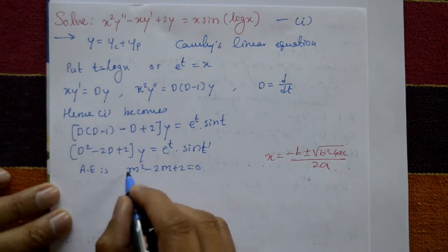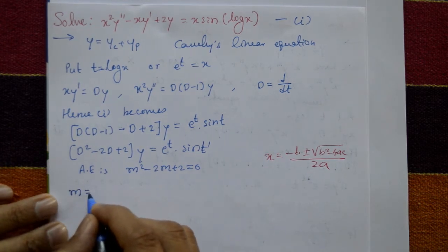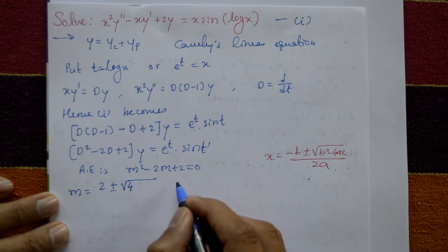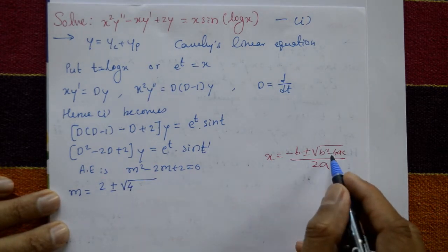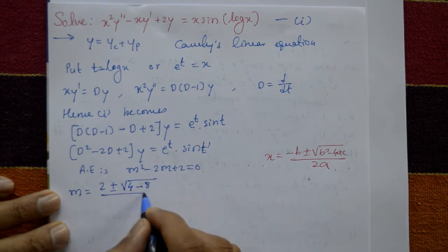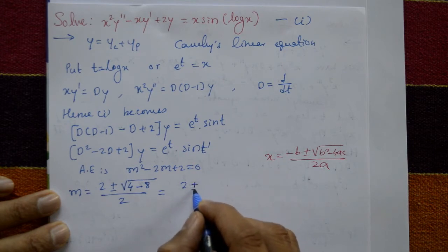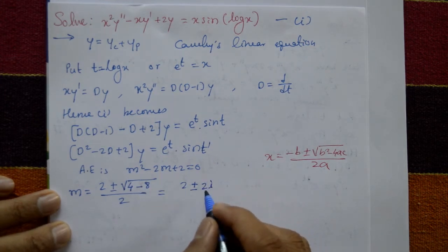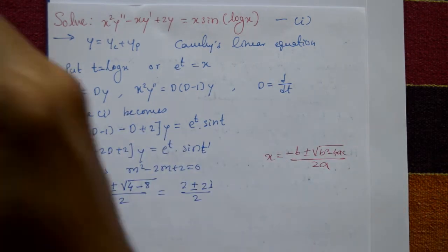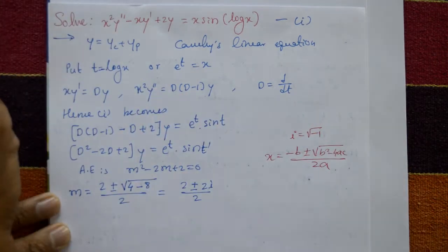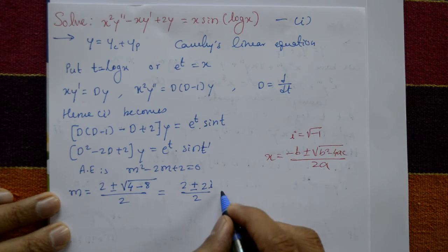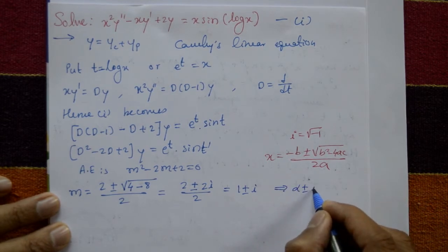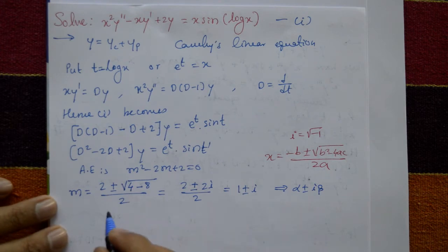Here a = 1, b = −2, c = 2. So m = (2 ± √(4 − 8)) / 2 = (2 ± √(−4)) / 2. Since √(−4) = 2i, this gives m = (2 ± 2i) / 2 = 1 ± i. So α = 1, β = 1, giving complex roots of the form α ± iβ.